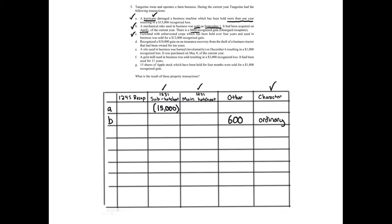Transaction C: farmland with an unharvested crop, used in business and held over four years, was sold for a $12,000 recognized gain. It's not a capital asset — it's business real property (number three on our list). We go to Section 1231: not the sub hotspot since it's a sale or exchange. For the main hotspot, it qualifies as a sale or exchange of business real property held more than one year. The $12,000 gain goes into the main hotspot. We don't net until all transactions A through G are complete.